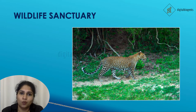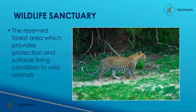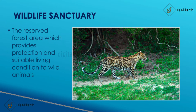Wildlife Sanctuary is a reserved forest area that provides protection and suitable living conditions to wild animals. Human disturbances are strictly prohibited there — killing of animals and cutting of trees are also banned. In a zoo, animals and birds are caged, but in a sanctuary they freely roam in their habitat. In a zoo, animals are brought from different parts of the world, but in a sanctuary we see local animals and birds. A zoo is open to the public, but to visit a wildlife sanctuary you must be accompanied by a forest guard.